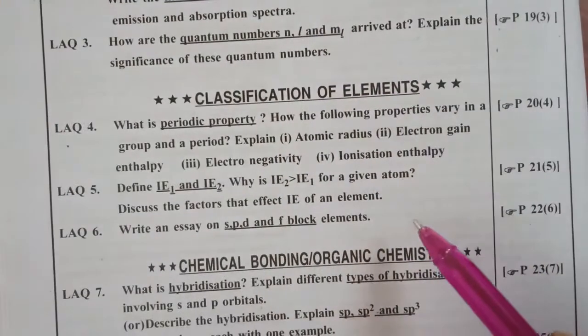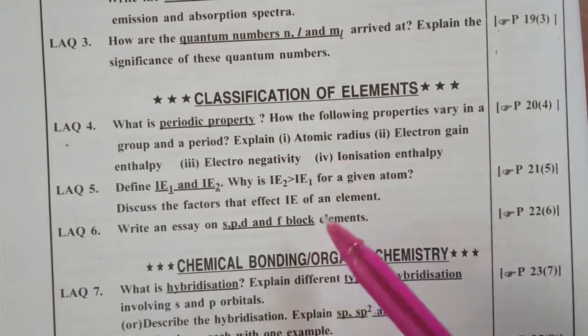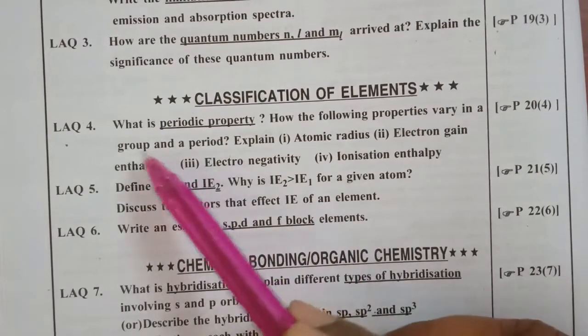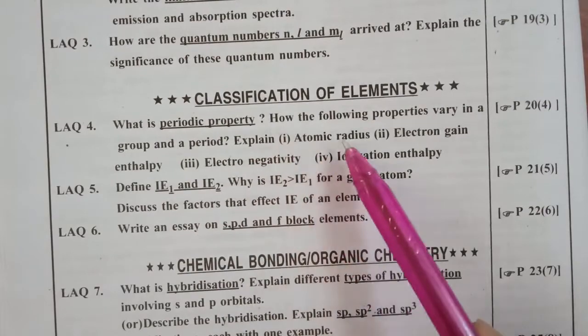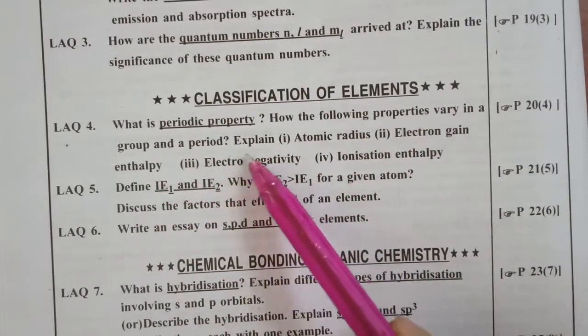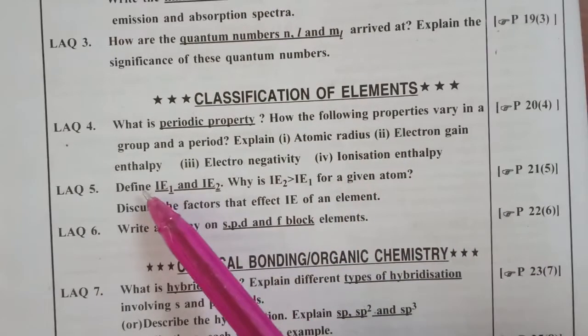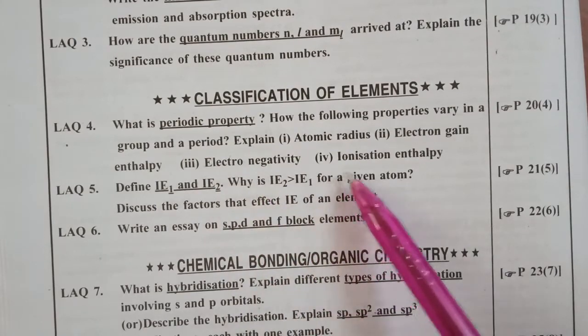So next is classification of elements. For example, what is periodic property? How the following properties vary in a group and period? Explain atomic radius, electron gain enthalpy, electronegativity, and ionization enthalpy.